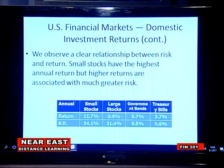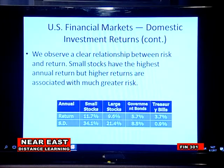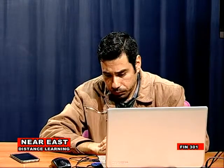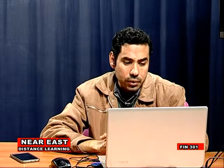For example, if you invest in small stocks, the expected rate of return may be 11.7 percent, while investing in treasury bills gives an expected rate of return of 3.7 percent. The expected rate of return for small stocks is higher than for treasury bills, but the standard deviation for small stocks is 34 percent while for treasury bills it is only 9 percent. This means small stocks offer higher returns but carry high risk, whereas treasury bills offer limited but very low-risk returns.